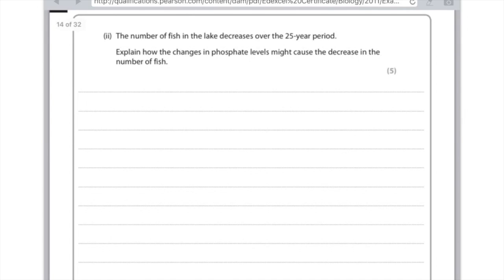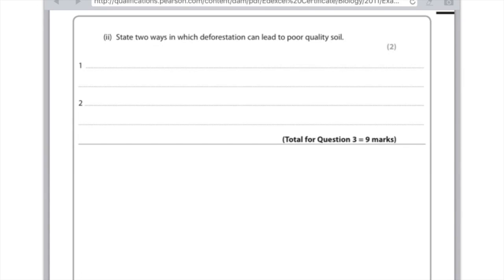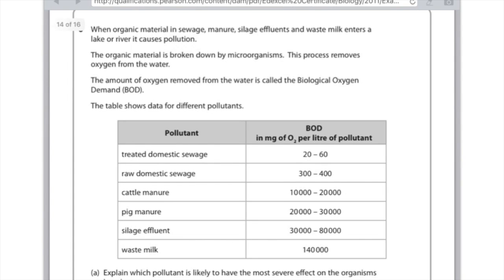I've just found this random part of another question that's related. State two ways in which deforestation can lead to poor quality soil. The first mark is due to leaching, because that's the loss of minerals. For the second mark, say something obvious like there's going to be less soil or the soil gets washed away.